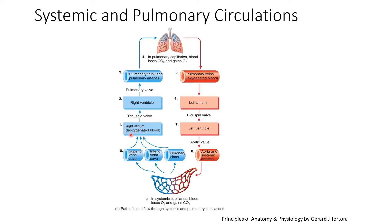The blood from the right atrium goes to the right ventricle through the tricuspid valve. Then from the right ventricle, through the pulmonary valve, the blood goes to the pulmonary trunk and pulmonary arteries. From here the blood goes to the lungs for purification.